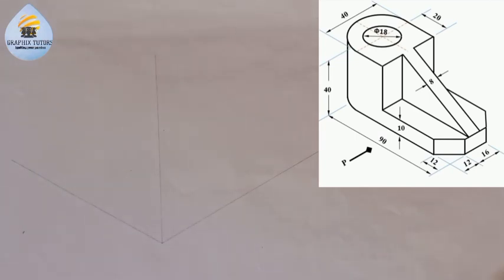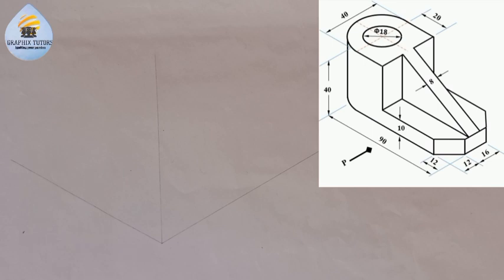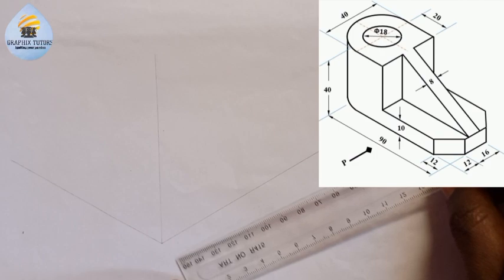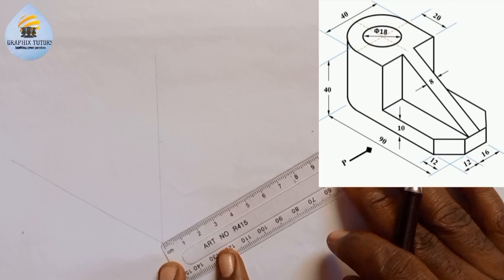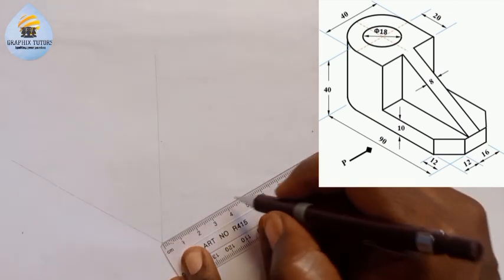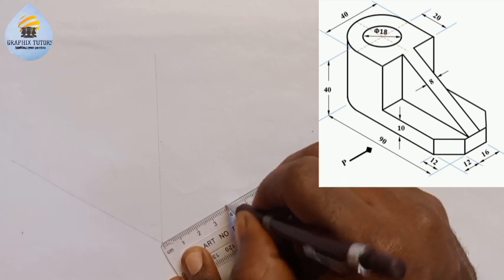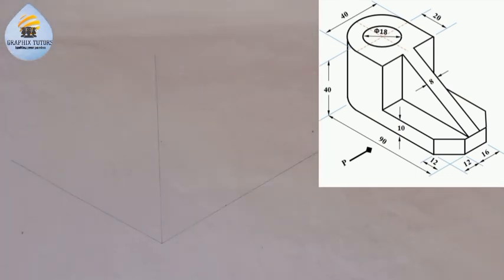Now this is the axis we have here. If you look at this side, the entire width from here to here is the width, and that is given to be 40. This is the entire width of that figure, and that is 40. So I'm going to measure 40 with my ruler, go from this point, and measure 40.